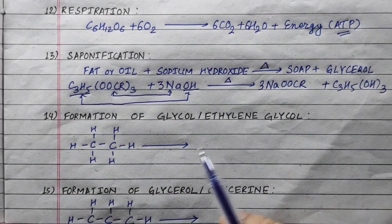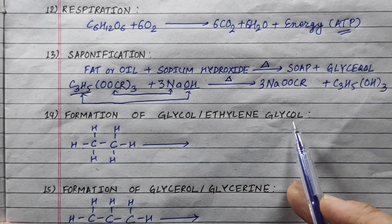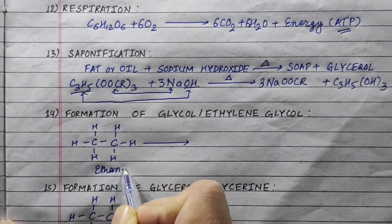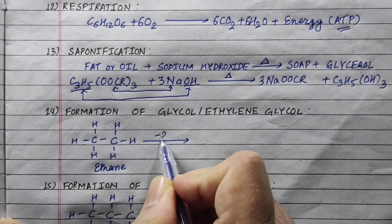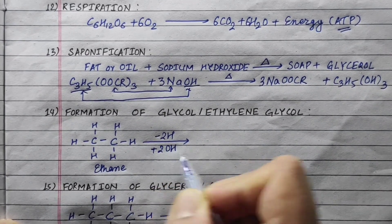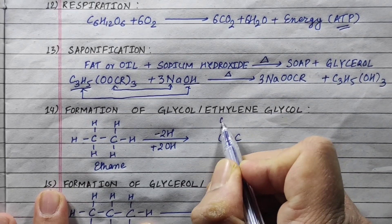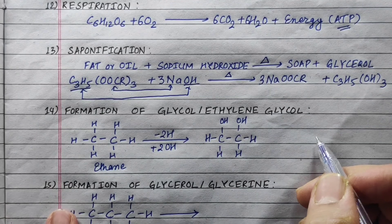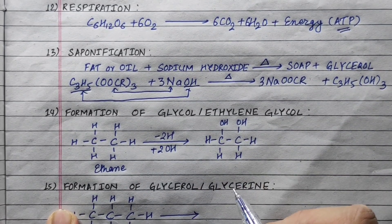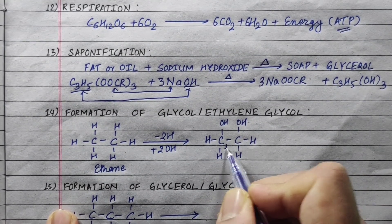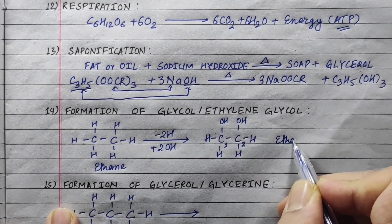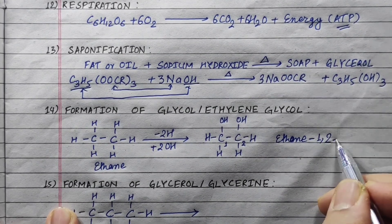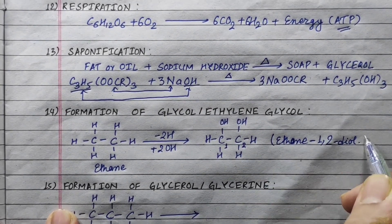Now, the formation of ethylene glycol. This is derived from glycerol. The IUPAC name for ethylene glycol is ethane-1,2-diol. It has two OH groups on a two-carbon ethane chain.